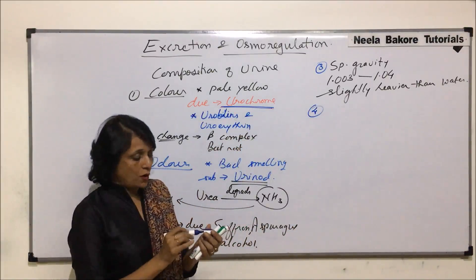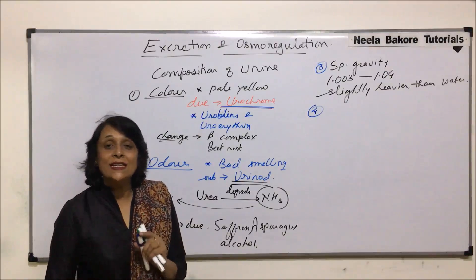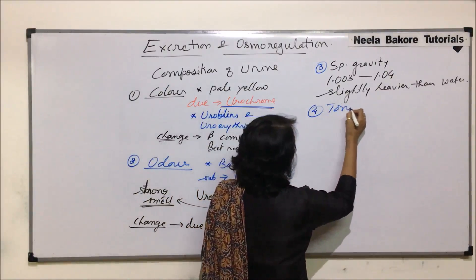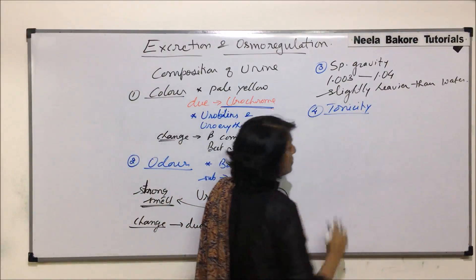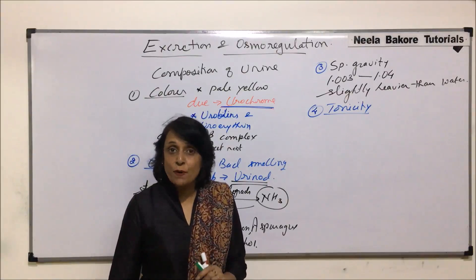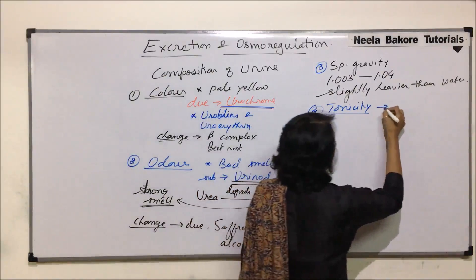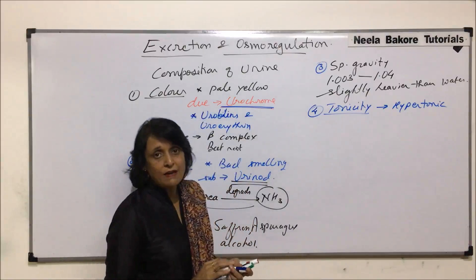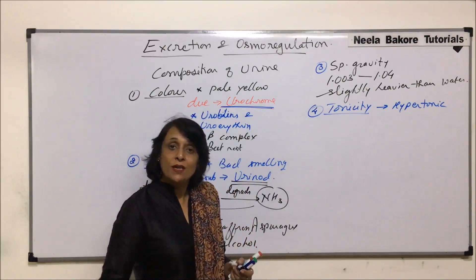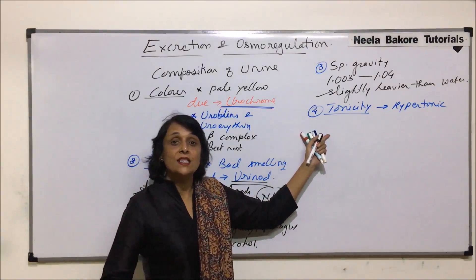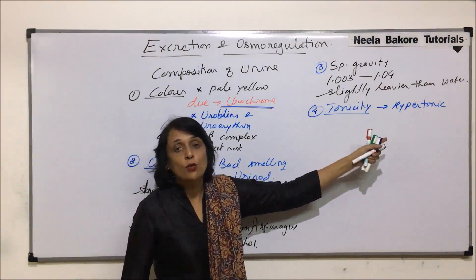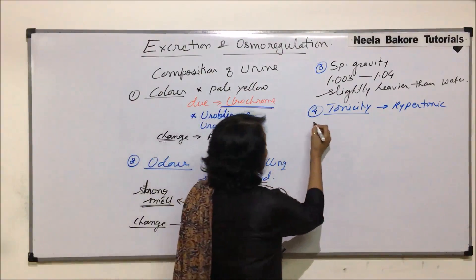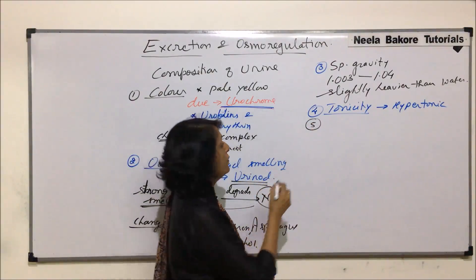The next property is tonicity, which refers to concentration. Normally, urine is hypertonic — that is, it is more concentrated compared to other liquids like blood. But if somebody is taking excessive water, then the urine is going to become hypotonic. In a normal situation, it is hypertonic.